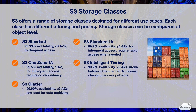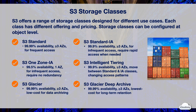S3 Glacier class is designed for 99.99% availability. Data is stored across at least three AZs. It's a lower-cost storage class for data archiving with retrieval time from minutes to hours. S3 Glacier Deep Archive class is also designed for 99.99% availability across at least three AZs. It's the lowest-cost storage class for data archiving with retrieval time within 12 hours. S3 storage classes are often used with S3 lifecycle management and storage class analysis for cost optimization.